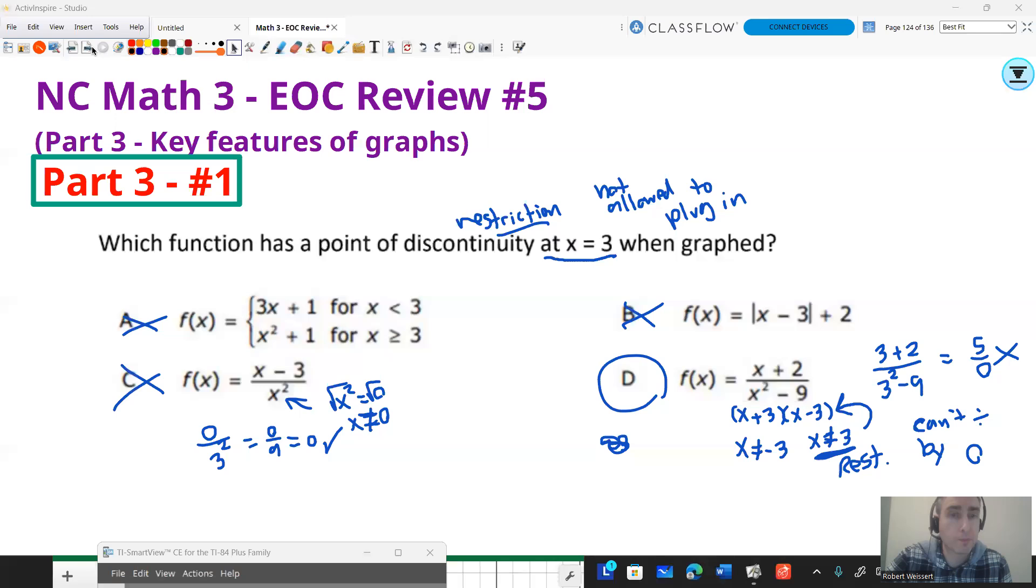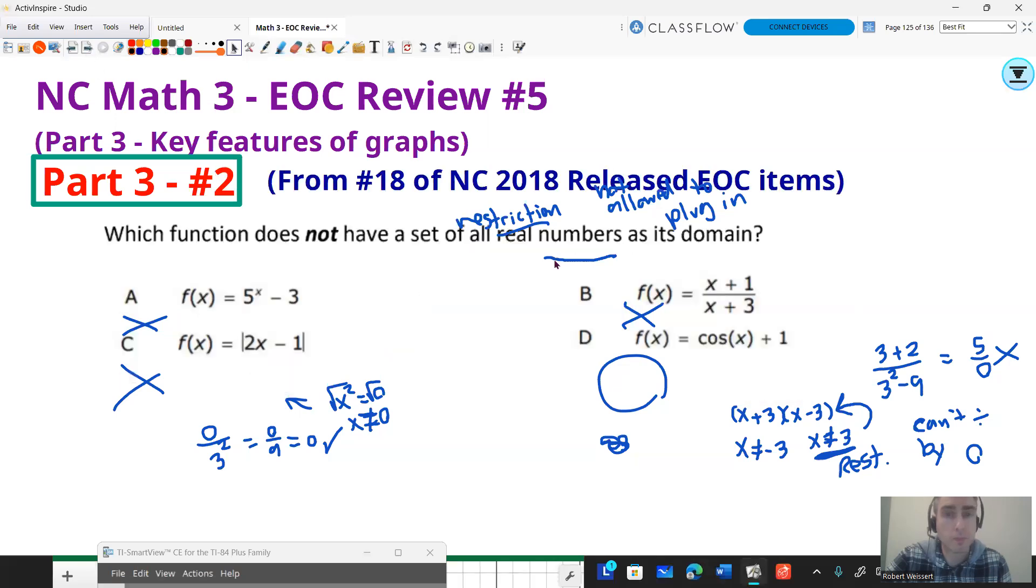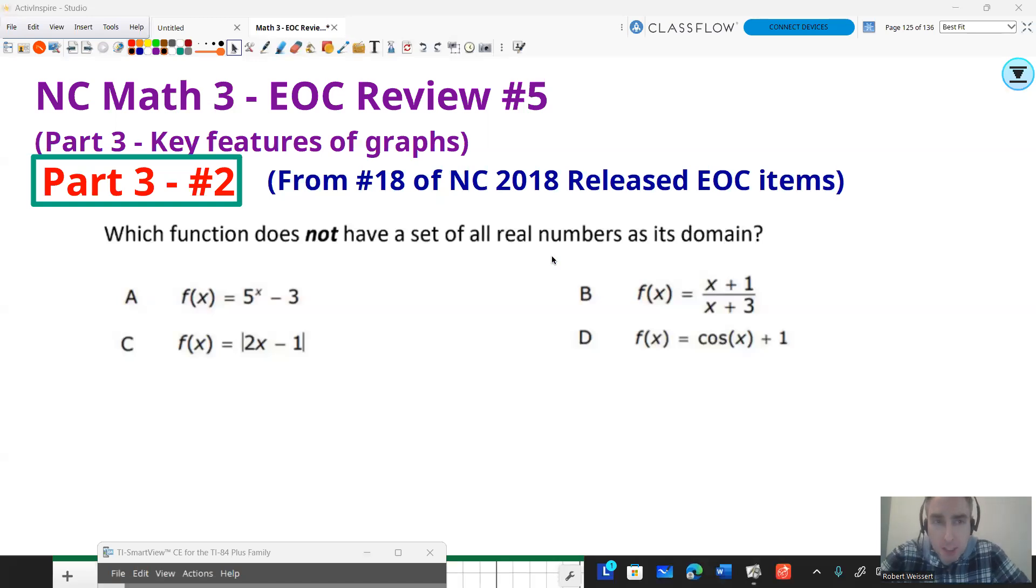Question two says which function does not have a set of all real numbers as its domain? It's kind of similar to the last question here. It's just worded differently. As far as it does not have a set of all real numbers, we're going to imply that there's one function in here that you're stuck with not being able to plug a number in. And because we just talked about it, you probably can figure it out. You can't divide by zero. So what function is going to have a part where you can't divide by it?